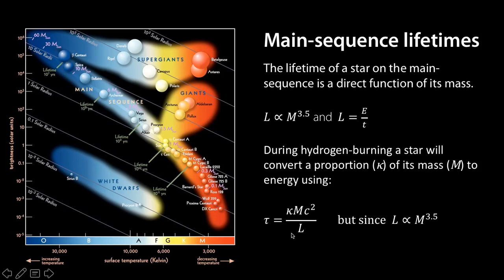Rearranging this gives us a function for tau, the lifetime of the star, the lifetime on the main sequence of the star, as being kappa mc squared over L. So it's directly proportional to M and inversely proportional to the luminosity.